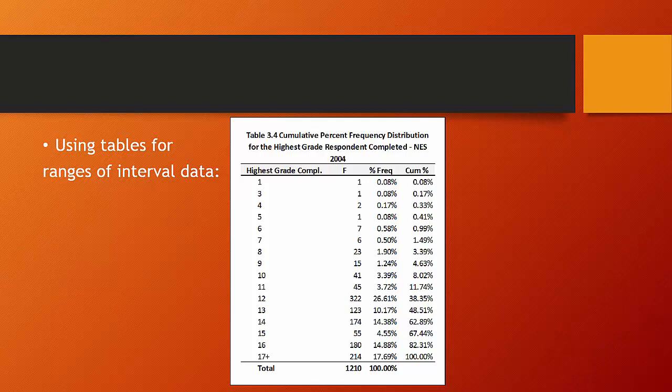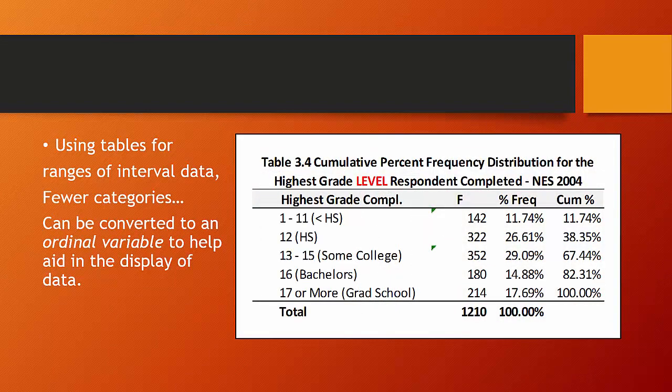So while we might like to preserve the properties of our interval level data to do any later statistical analysis, for the purpose of displaying our data, we might like to reduce the number of categories. So for example, I can take the cumulative percent frequency distribution for the highest grade level the respondent completed. And in this case,